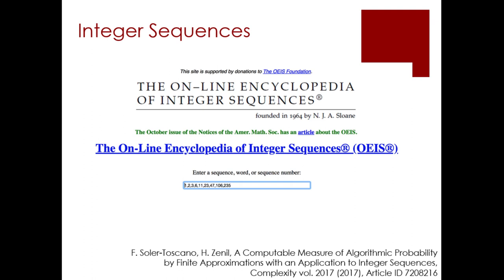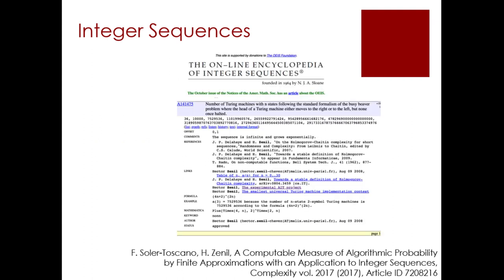If we want to work with integer sequences, one obvious experiment is to see whether we can correctly characterize the hundreds of thousands of sequences in a very popular database called the Online Encyclopedia of Integer Sequences, populated by people and based on some recursive algorithms that generate the sequences. Many more experiments can be done, and we have many open projects that you can undertake to apply algorithmic information dynamics to these sequences, but here we did a couple of very interesting experiments with very positive results.